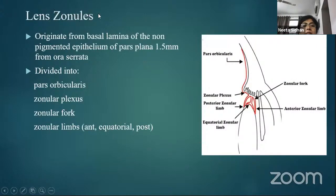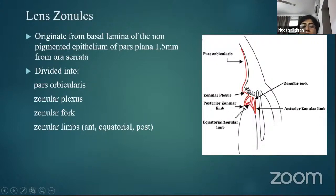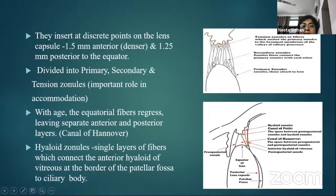The lens zonules originate from the pars plana, about 1.5 millimeters from the ora serrata. Along its course, it can be divided into the pars orbicularis, the zonular plexus, and the zonular fork at the site of the ciliary processes. From here, the fibers interdigitate into three limbs: anterior, equatorial, and posterior. They insert at discrete points on the lens capsule, about 1.5 millimeters anterior and 1.25 millimeters posterior to the equator. The zonules are further divided into secondary zonules and, close to the ciliary body, tension zonules, which play an important role in accommodation. There are also hyaloid zonules connected to the anterior hyaloid face.